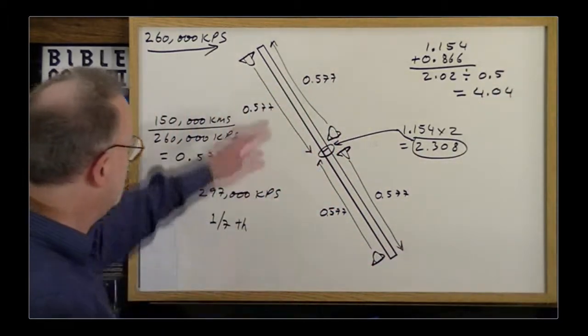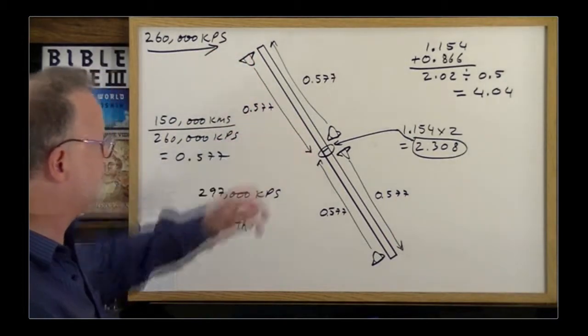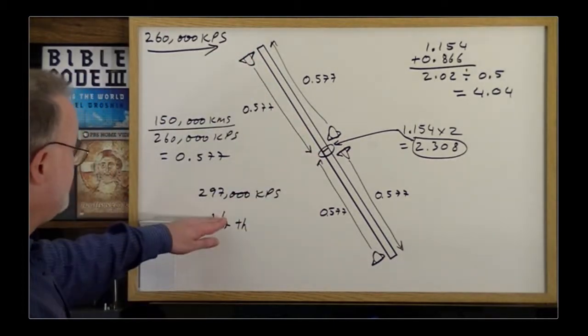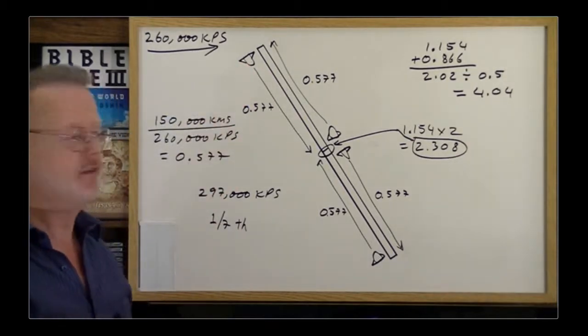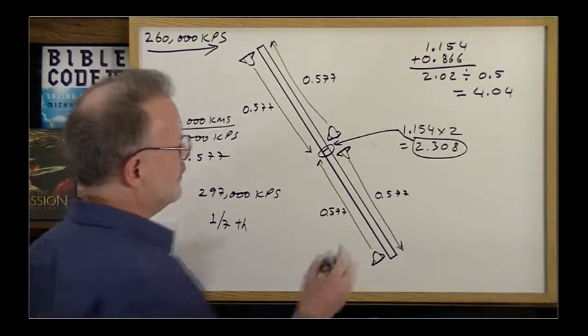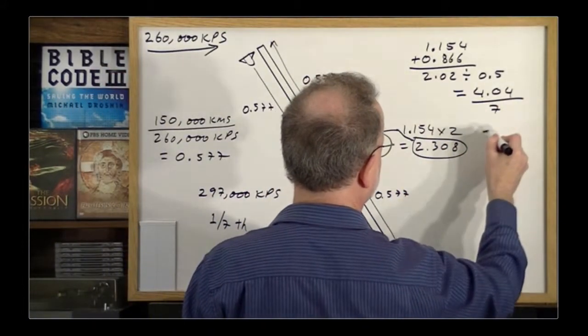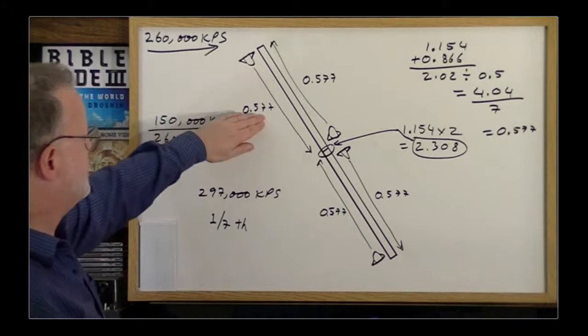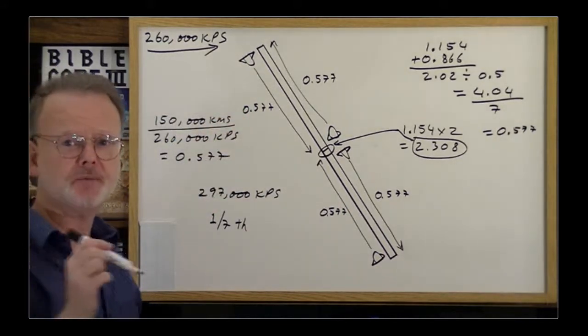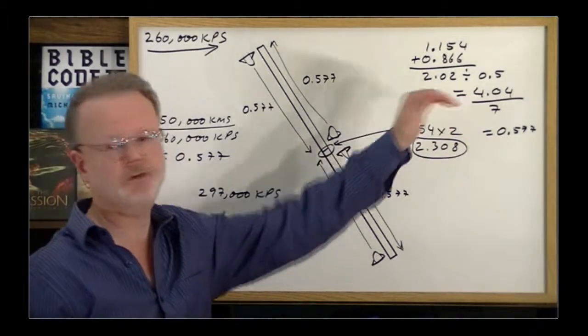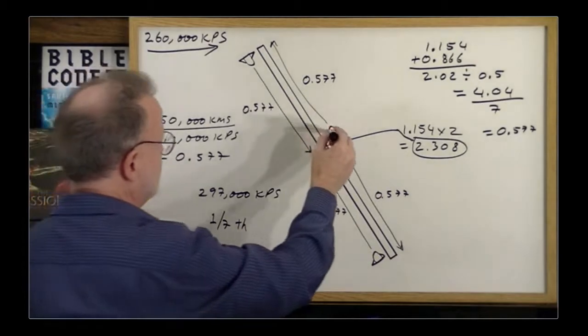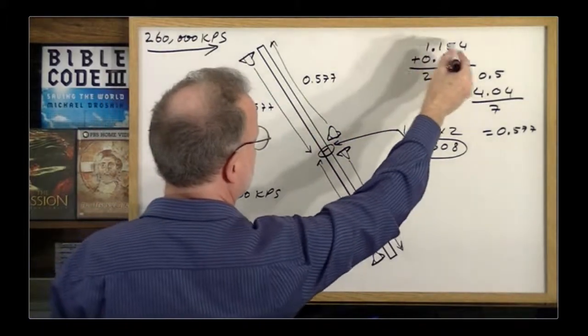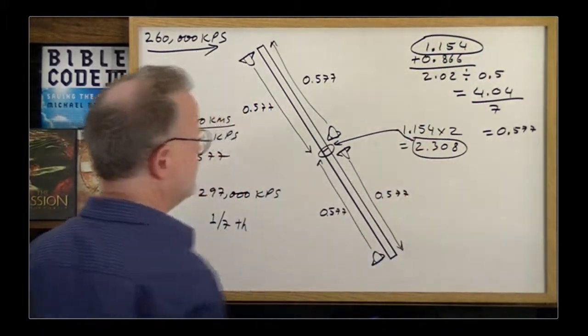So, from the external observer's point of view, it takes this spaceship 4.04 seconds to go from one end to the other. From the external to the space station. Now, this guy, on the other hand, on board the spaceship, is moving through time at one-seventh of the speed at which the external observer is moving. So, if you take 4.04 divided by 7, that equals 0.577. So, that's why this guy would experience 0.577, because he's moving through time so slowly, not like the external observer who views a total of 4.04 seconds. And so, he actually does experience 0.577 in this direction and 0.577 in the other direction, giving you a total of the 1.154 and so forth, which is half of what this guy would experience.